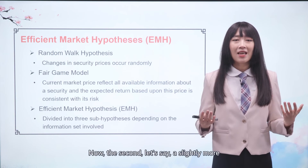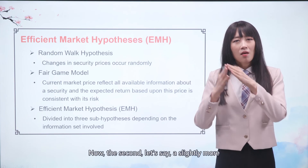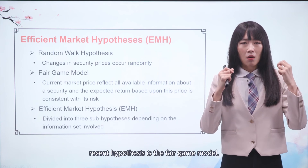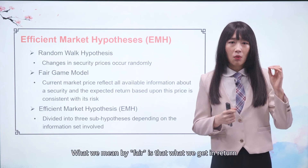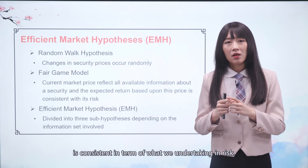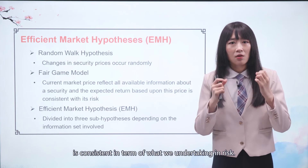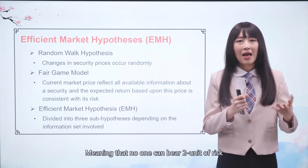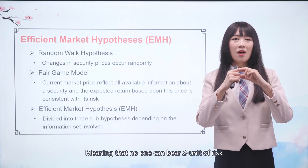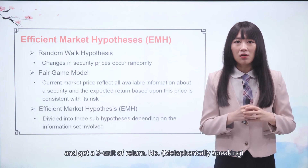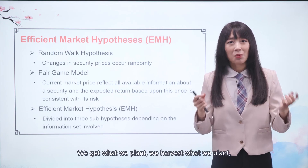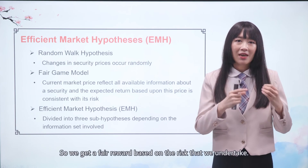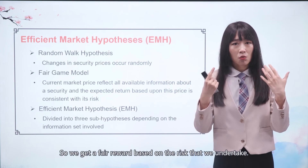So the best strategy you can follow under the random walk hypothesis is just to buy and hold. The second, slightly more recent hypothesis is the fair game model. What we mean by 'fair' is that what we get in return is consistent with the risk we undertake. No one can have a superior return — no one can bear two units of risk and get three units of return. We harvest what we plant, so we get a fair reward based on the risk that we undertake.